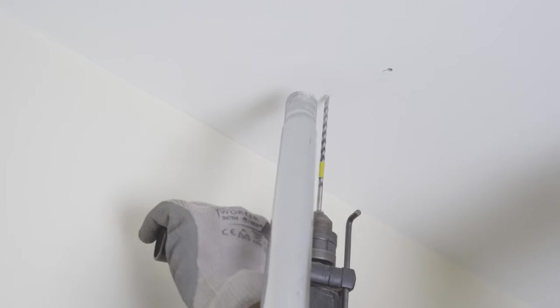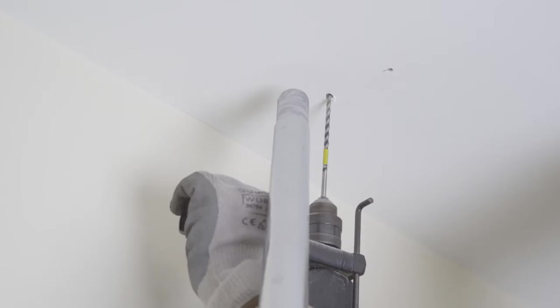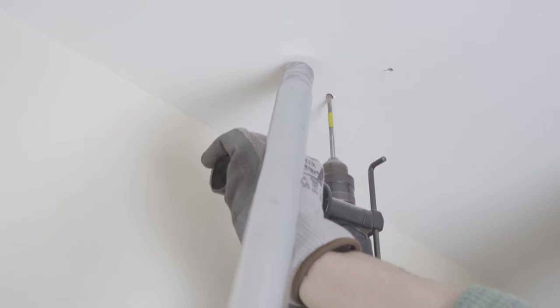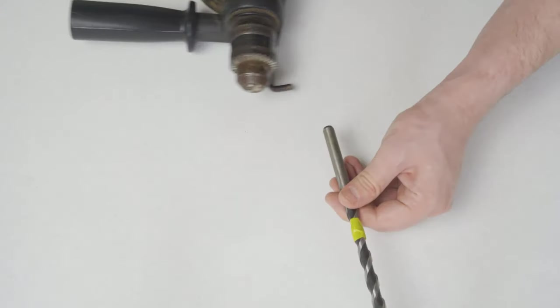Start by using the smaller drill bit. To minimize drill dust, hold a vacuum cleaner close to the hole so that it quickly captures the dust. We reached the needed depth and can now change to the 12 mm drill bit.